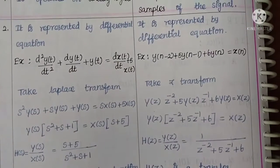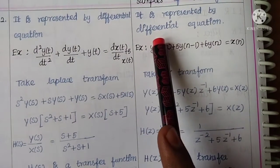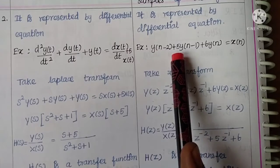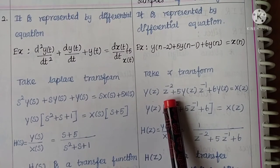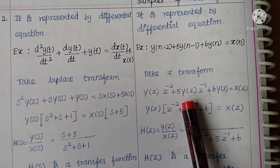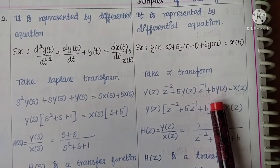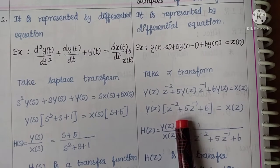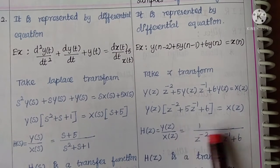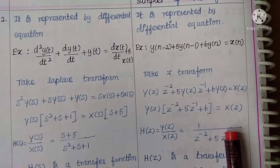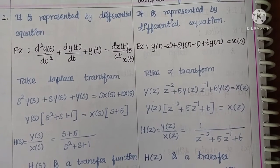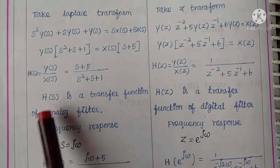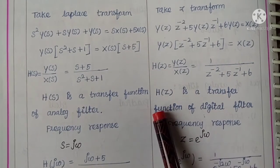For the digital filter, since it is represented by a difference equation, we take the Z-transform on both sides. y(n-2) gives Y(z)·z⁻², 5y(n-1) gives 5Y(z)·z⁻¹, and 6y(n) gives 6Y(z), which equals X(z). Combining Y(z) and X(z) terms, H(z) = Y(z)/X(z) = 1 divided by (z⁻² + 5z⁻¹ + 6). Here H(z) is the transfer function of the digital filter.